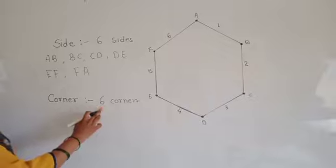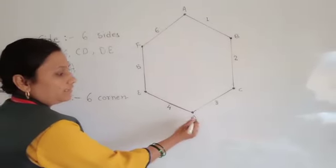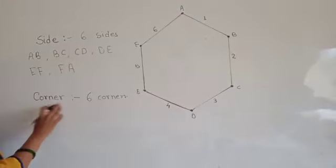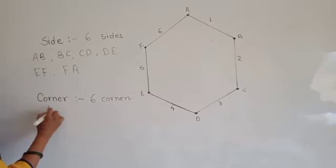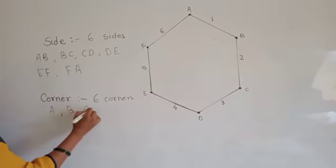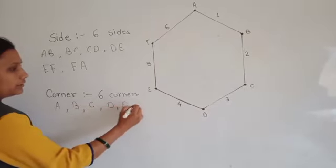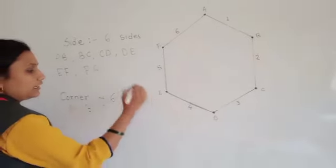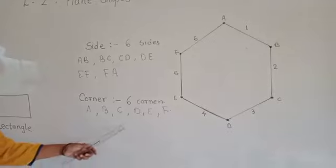Now, corners. I have already given an alphabet to each corner, so that alphabet is the corner's name: Corner A, Corner B, Corner C, Corner D, Corner E, and Corner F. These are the corners of this figure.